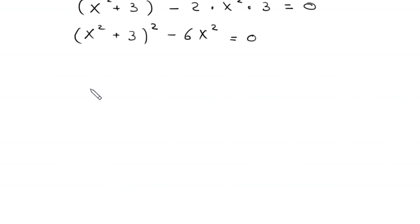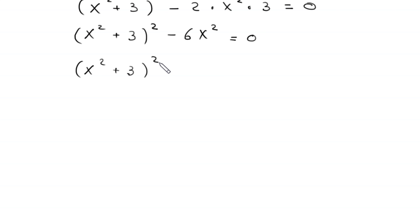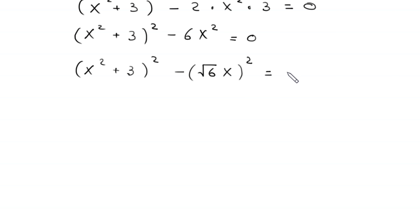Now we turn this expression into a difference of two squares. The first term remains x squared plus 3, whole squared. The term negative 6 times x squared can be written as negative root 6 times x, whole squared, equals 0.